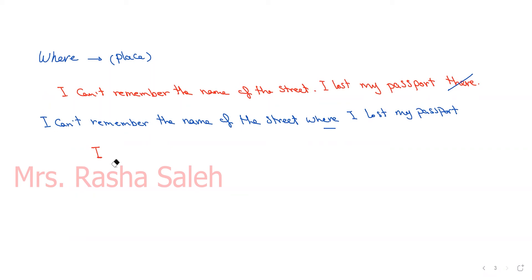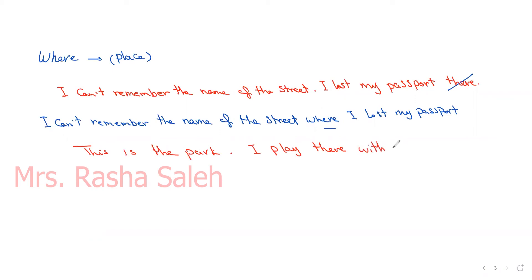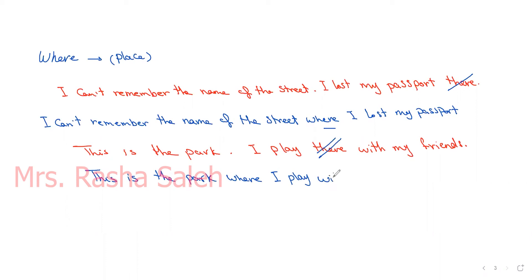Another example: 'This is the park.' and 'I play there with my friends.' We use 'where' to join them. The result is: 'This is the park where I play with my friends.' We remove 'there'.